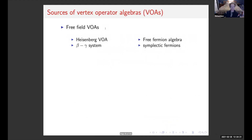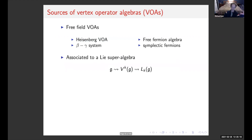Now let's turn a corner and talk about sources for more vertex algebras. We looked at commutative vertex algebras and the free boson. Other examples in the same category as the Heisenberg VOA are free field VOAs: the free fermion algebra, the beta-gamma system, and symplectic fermion. These are all fairly close to being polynomial rings. Then there are VOAs associated with Lie superalgebras — you can take a Lie superalgebra G, find a universal vertex algebra associated to it, and it has a unique simple quotient, denoted V^k(G) and L_k(G).